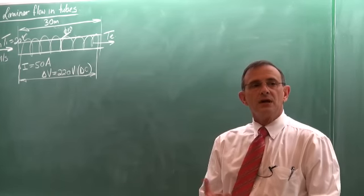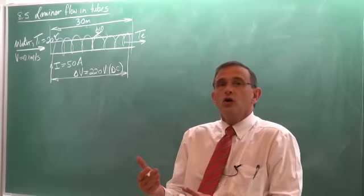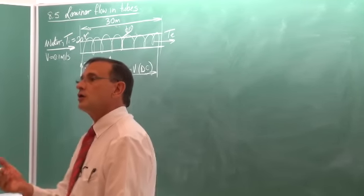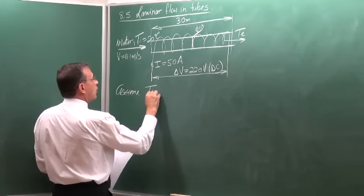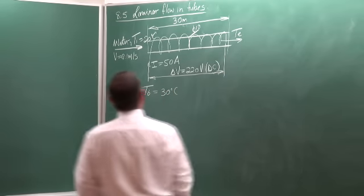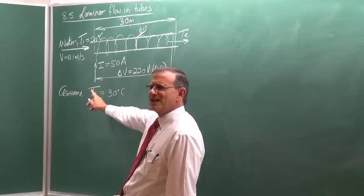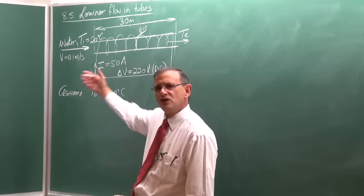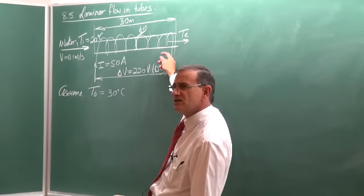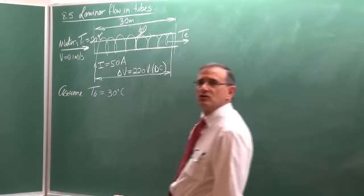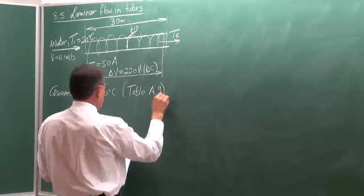Something I'm going to address is something many of you have problems with: the bulk temperature. I'm going to show you what is the effect of your choice of bulk temperature. Let's start by assuming a bulk temperature of 30 degrees Celsius. I know the inlet temperature is 20, so it doesn't make sense to choose 10 degrees Celsius because we know it is going to be heated. We hope the outlet temperature is not more than 100 degrees Celsius so the water is not boiled.